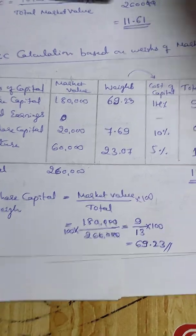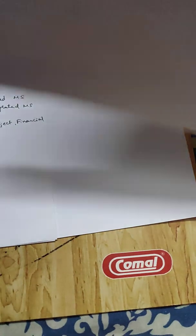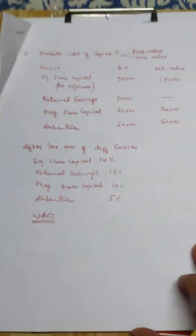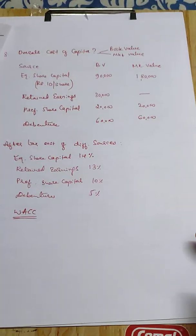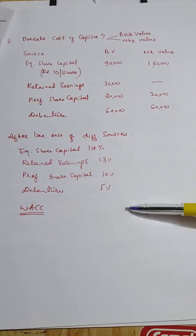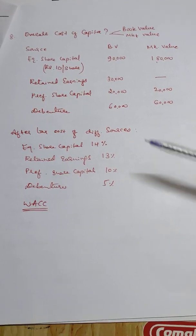So this is how it is done — very simple. The next two stages of weighted average cost of capital follow the same approach.